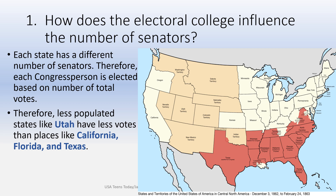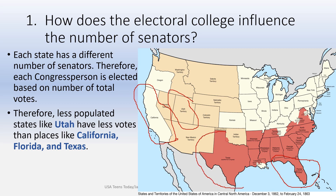Less populated states like Utah have less votes than Florida, Texas, and California. California is a little bit larger, so it has a lot of people that live there. Everyone knows Florida — that's where we're located — we're so populated. We have the third worst traffic report in the nation. Texas is a big state, too. Those states are heavily populated.